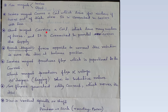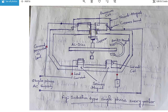Shunt magnet carries a coil which has many number of turns and it is connected in parallel across the supply. Yehaan pe number of turns jadha use hota hai, and yeh line ke saath parallelly connect rehta hai.